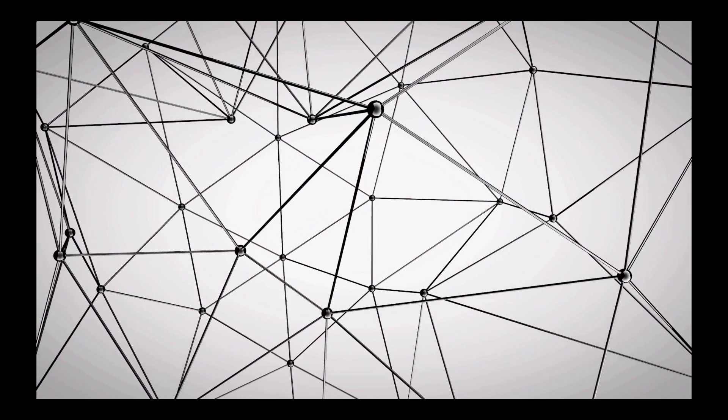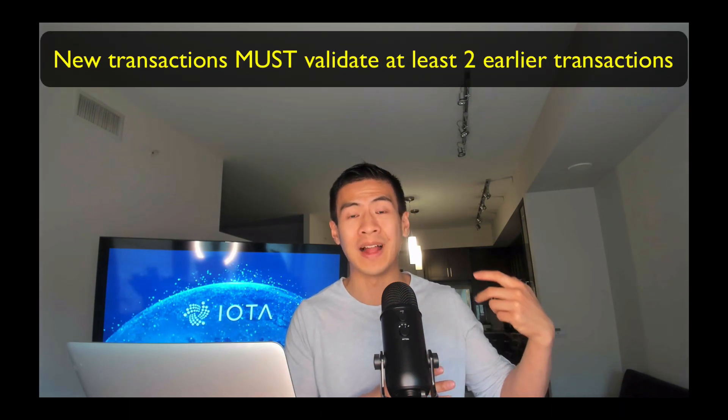With blockchains like Bitcoin and Ethereum you can't eliminate fees — there will always be fees because there must be an incentive for miners and stakers to validate transactions and create blocks. With IOTA's Tangle, instead of a global blockchain there is a directed acyclic graph called the Tangle used as a ledger to track and process transactions without blocks and chains.